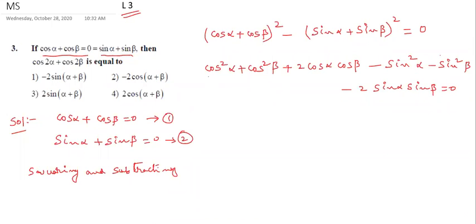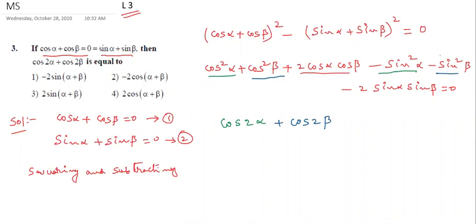Now students observe here: cos²α − sin²α = cos 2α. What is the formula? cos²θ − sin²θ = cos 2θ. Similarly, cos²β − sin²β = cos 2β. And the remaining two terms: 2 cos α cos β − 2 sin α sin β.